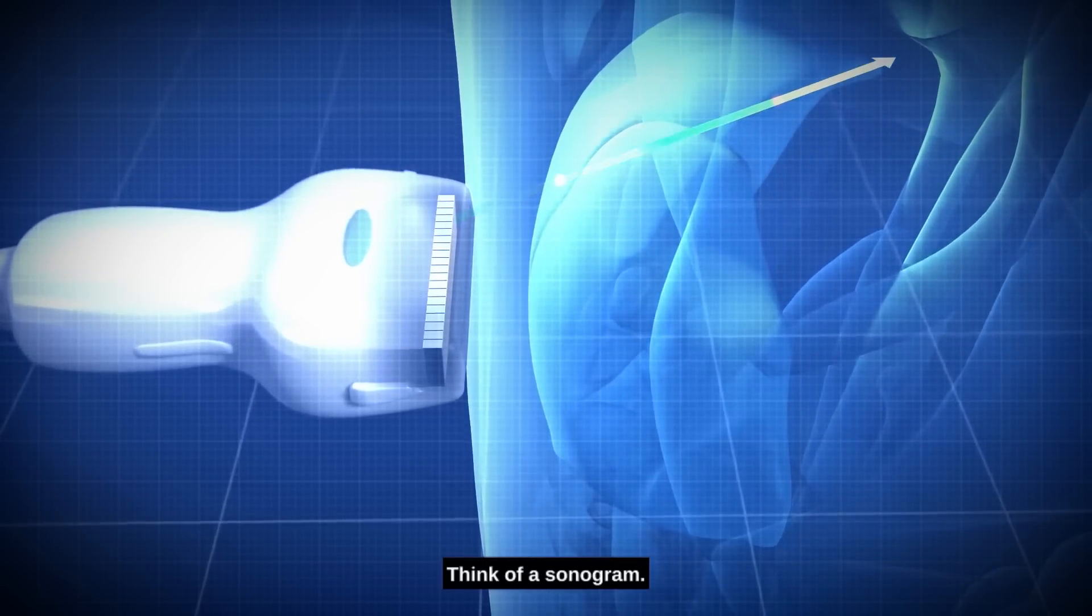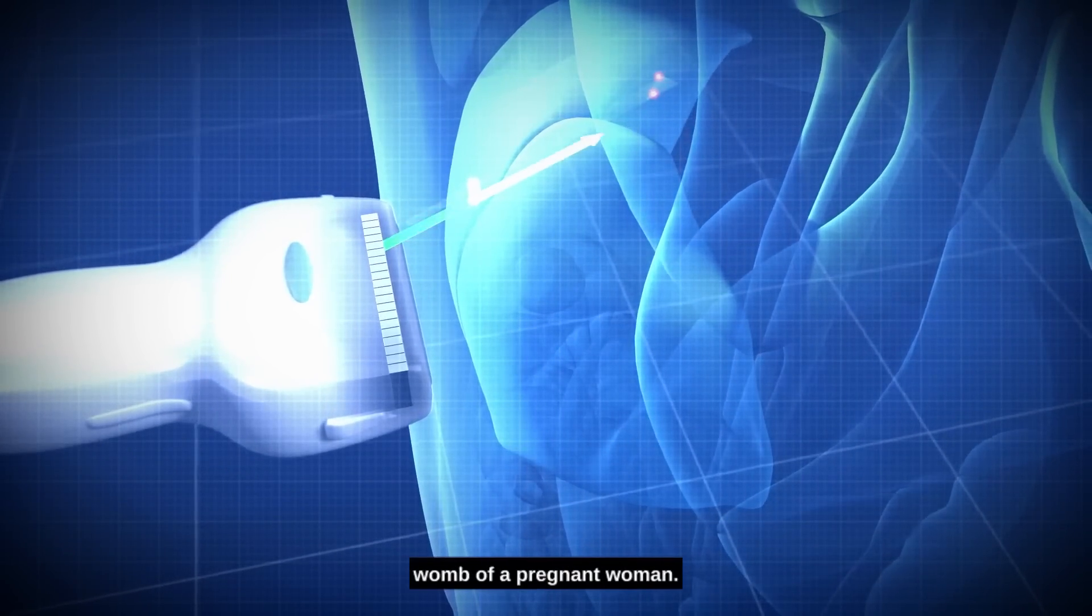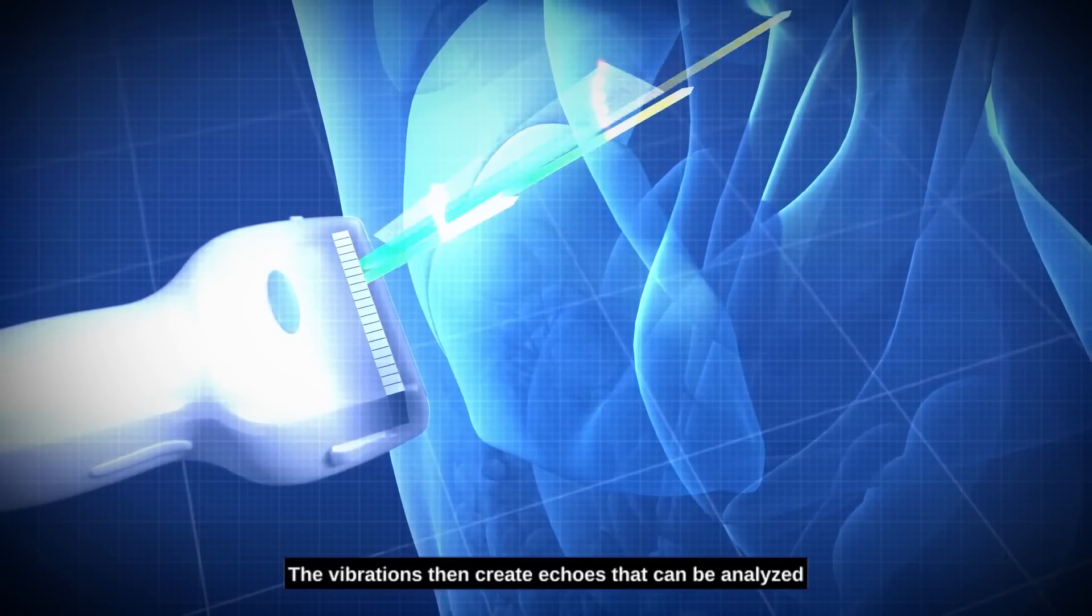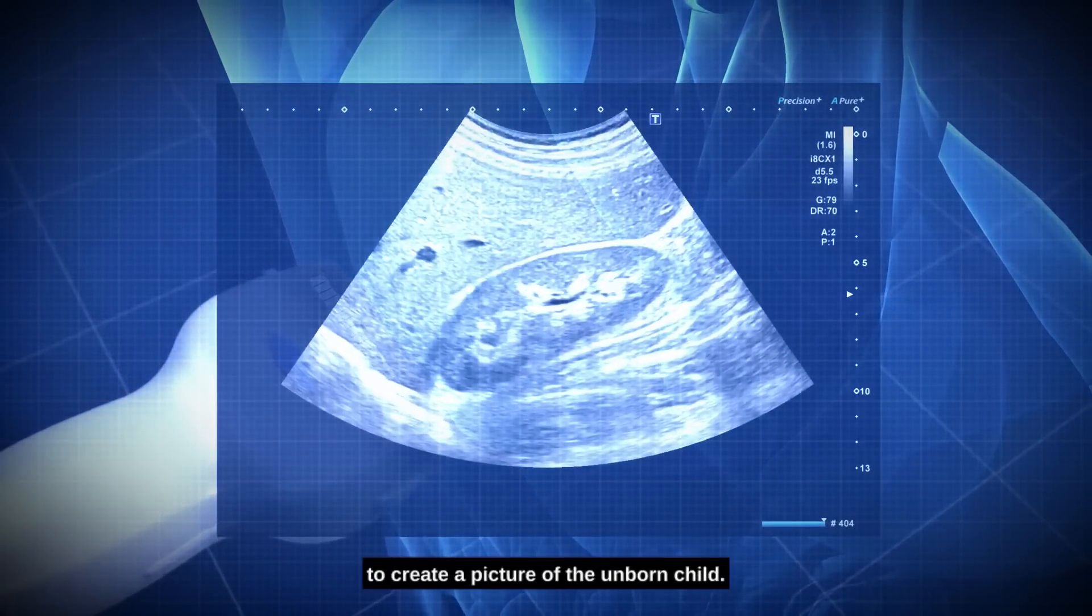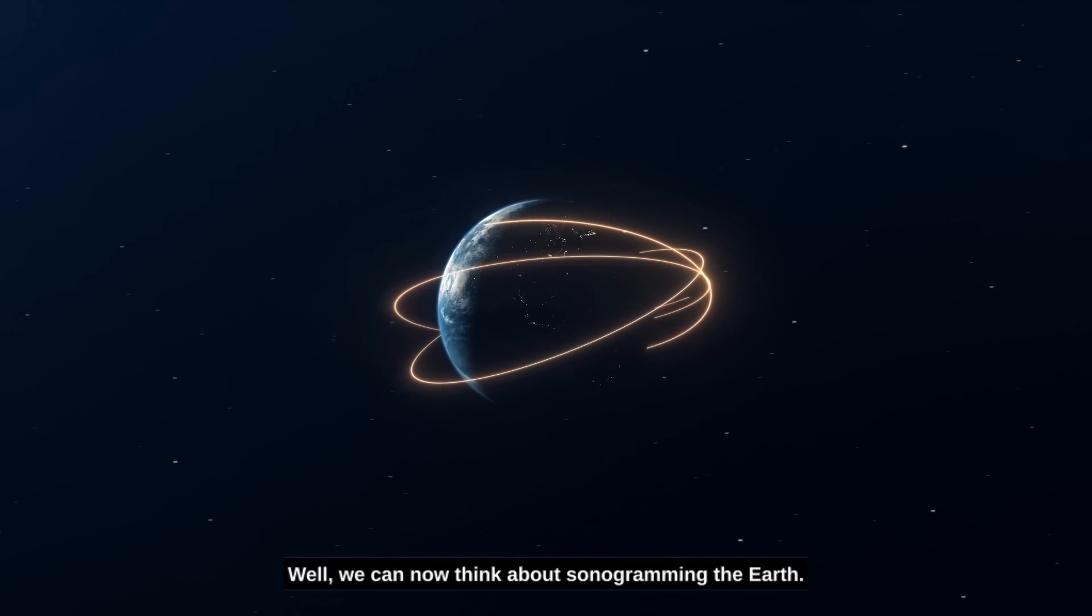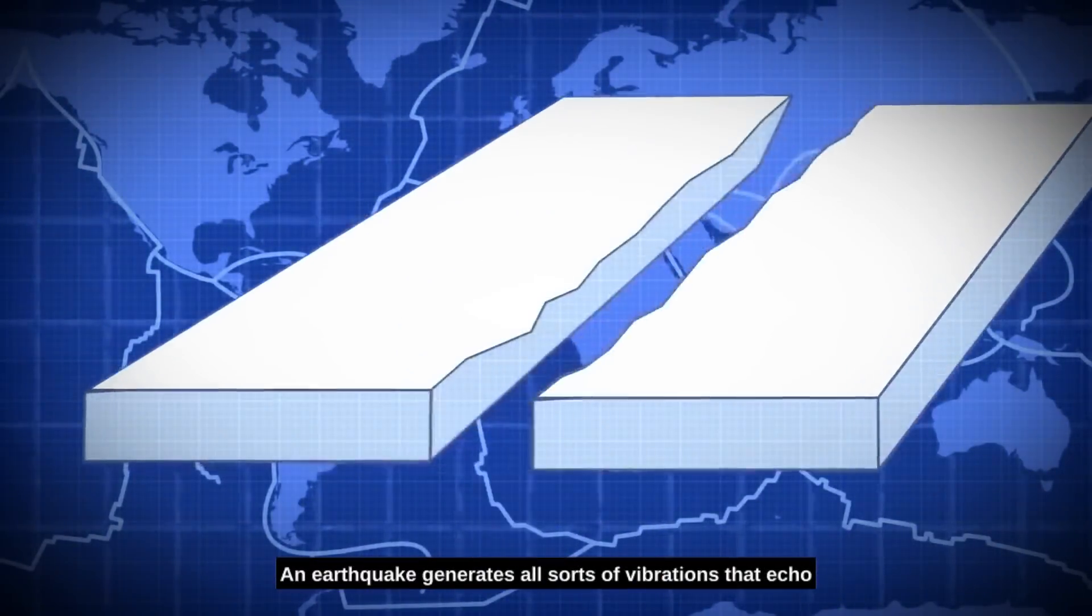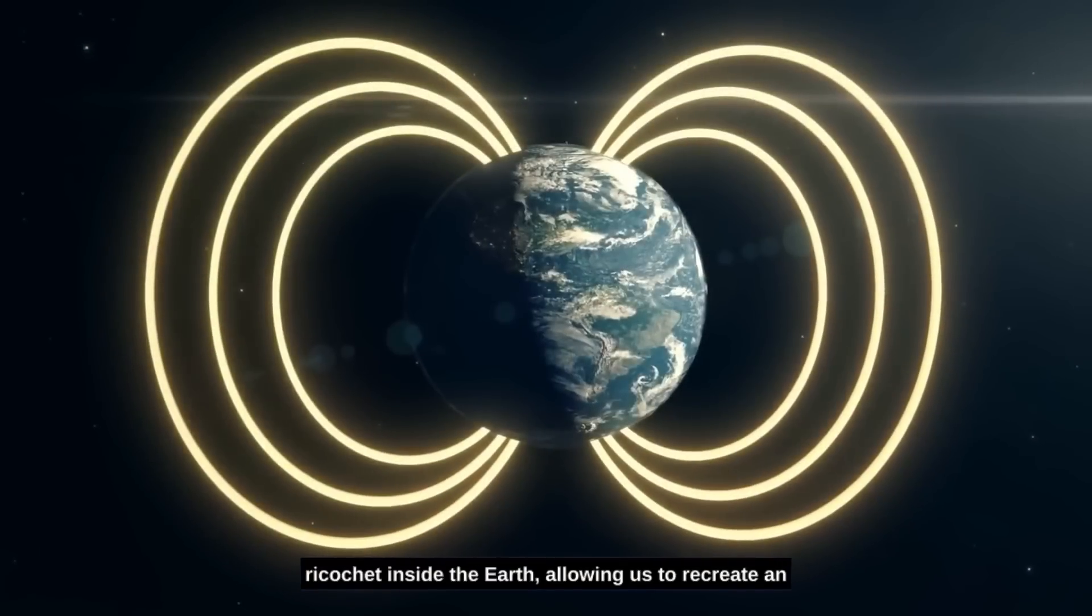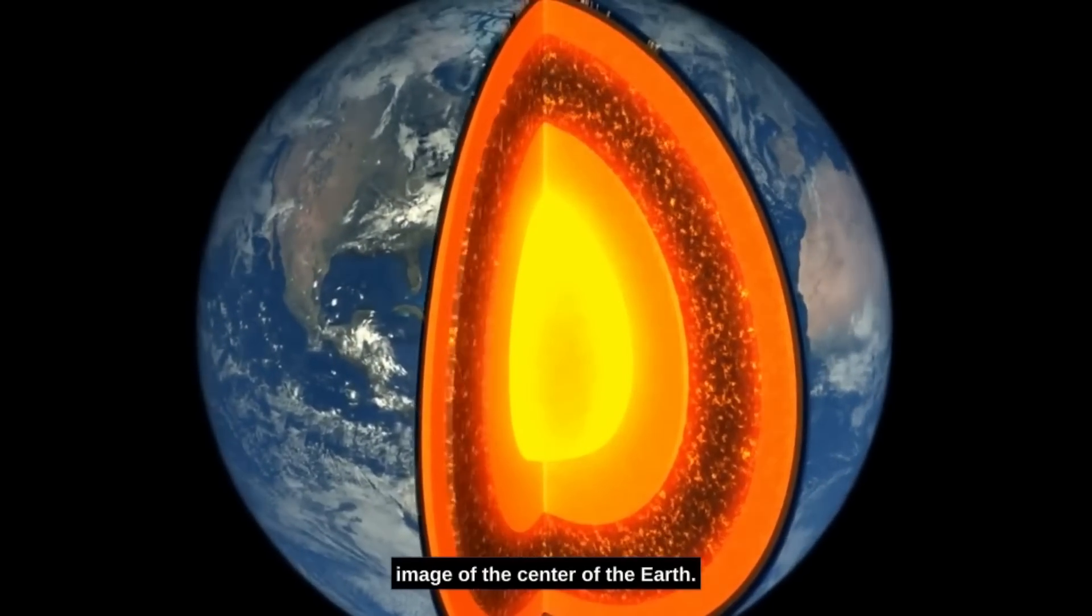Think of a sonogram. A sonogram shoots vibrations into the womb of a pregnant woman. The vibrations then create echoes that can be analyzed to create a picture of the unborn child. Well, we can now think about sonogramming the Earth. An earthquake generates all sorts of vibrations that echo, ricochet inside the Earth, allowing us to recreate an image of the center of the Earth.